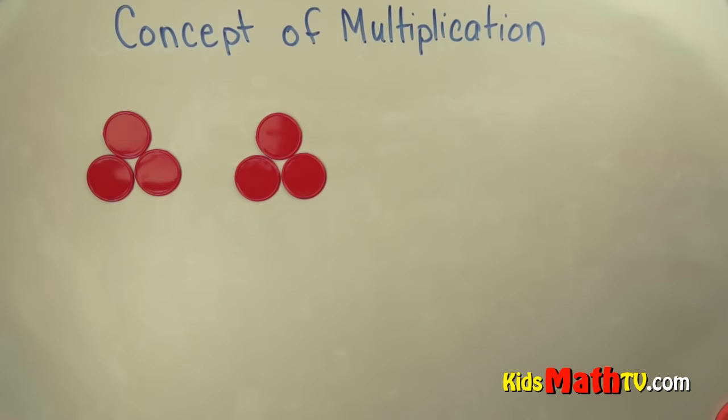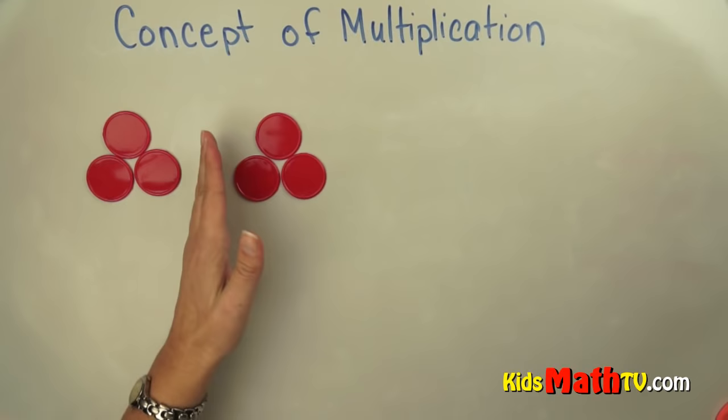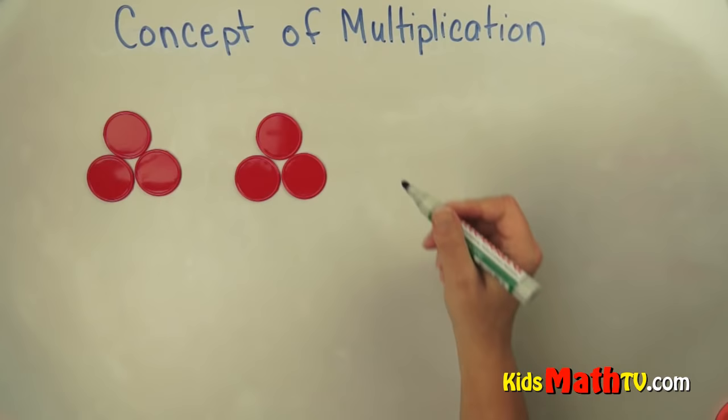If I count them, I see 1, 2, 3 in this group and 1, 2, 3 in this group. So we have two groups that are the same. Three here and three here. So we have two groups of three.